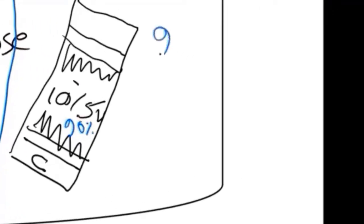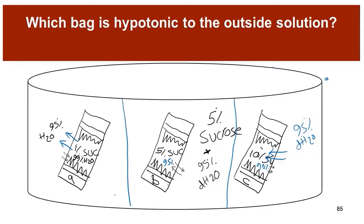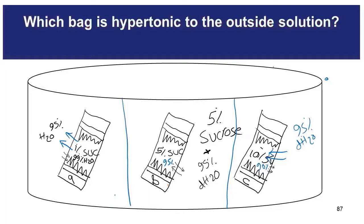Bag C has 10% sucrose inside, so the water concentration inside is 90%, while outside it is 95%. Therefore water enters the bag, so bag C will gain weight. Which bag is hypotonic to the outside? We focus on solute concentration — bag A has only 1% sucrose, which is the lowest, so bag A is hypotonic. On the other hand, bag C is hypertonic to the outside because it has the highest concentration of sucrose at 10%.